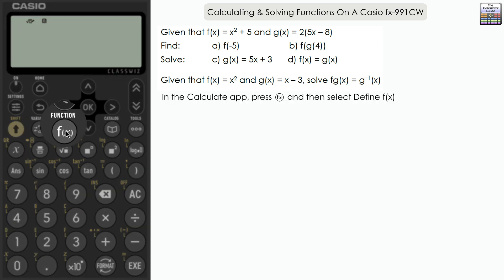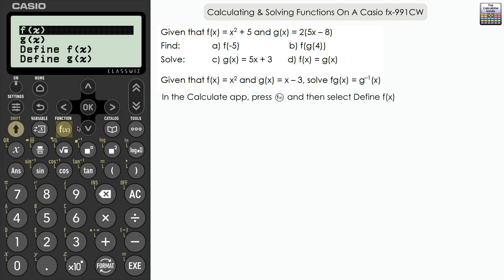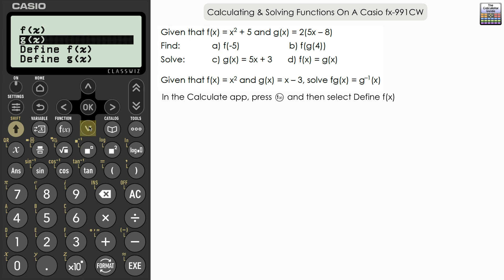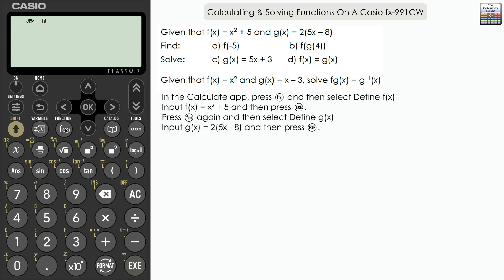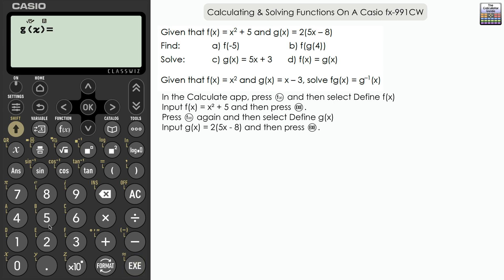In the calculate app, press Function and scroll down to define f(x), then define g(x). Define f(x) first — carefully input x squared plus 5 and press Execute. Then go to Function once more, down to define g(x), and carefully input 2(5x minus 8). Don't forget the brackets — close them and press Execute. Now we're ready to go.